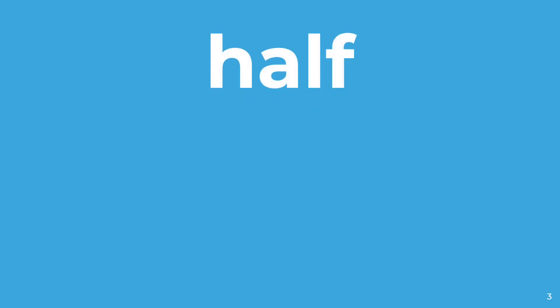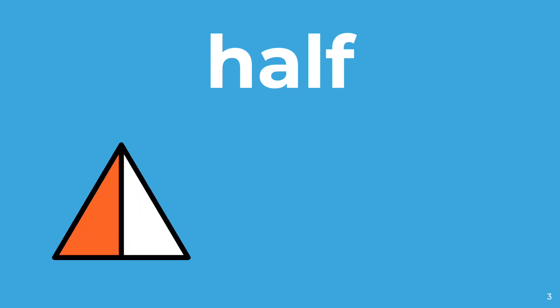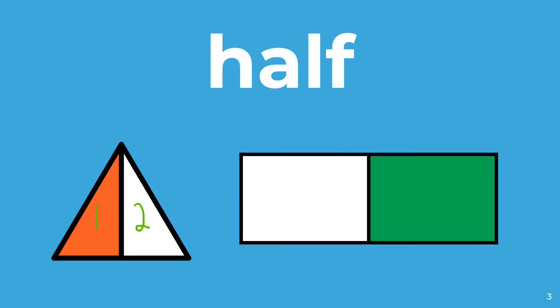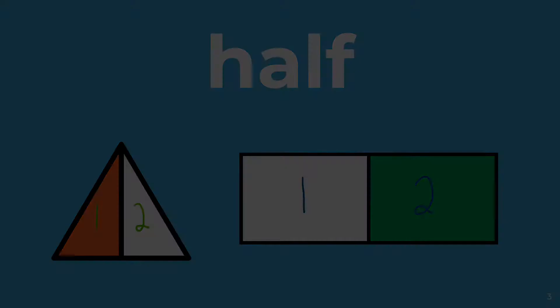A half is an object that has been partitioned or divided into two equal parts. This triangle has two parts so it is partitioned into halves. This rectangle also has two parts so it too is partitioned into halves.